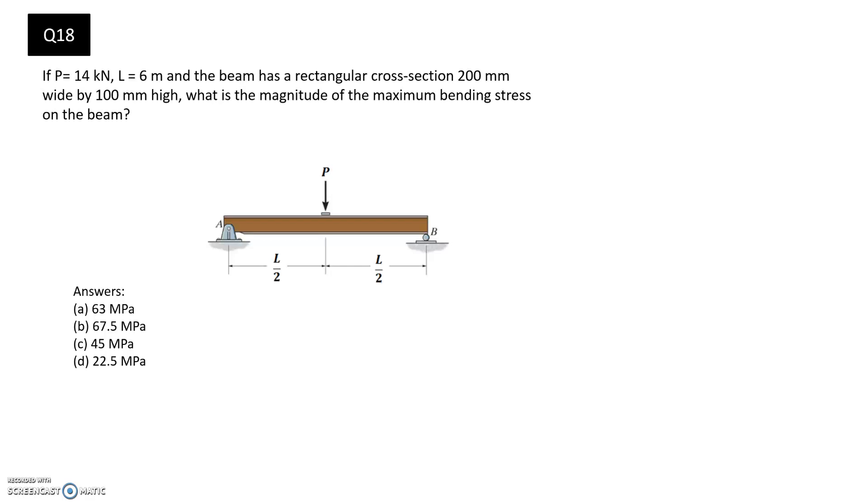If P is equal to 14 kN and L is equal to 6 m, and the beam has a rectangular cross-section 200 mm wide by 100 mm high, what is the magnitude of the maximum bending stress on the beam? So this is a bending stress question, obviously.